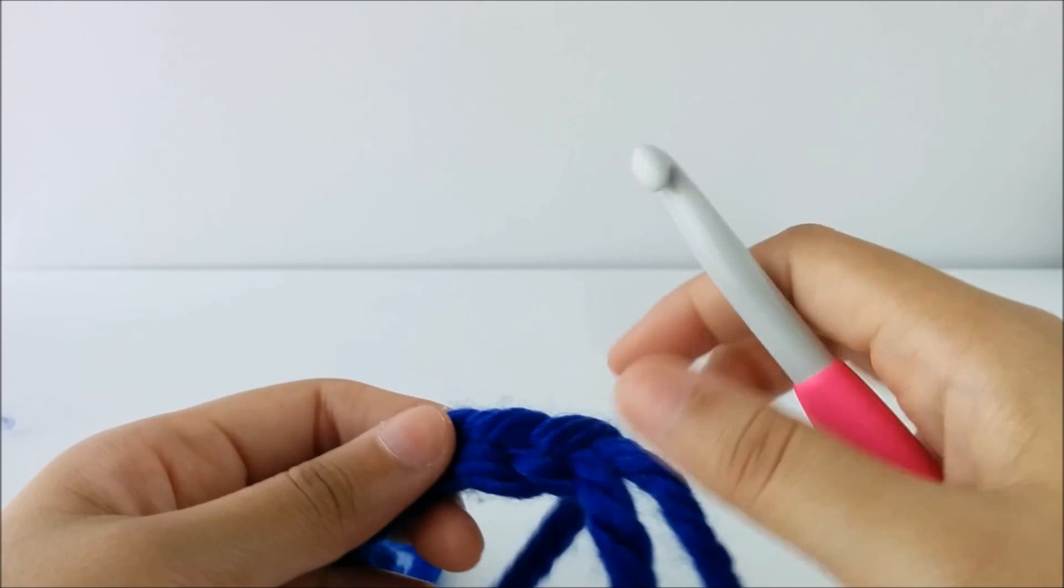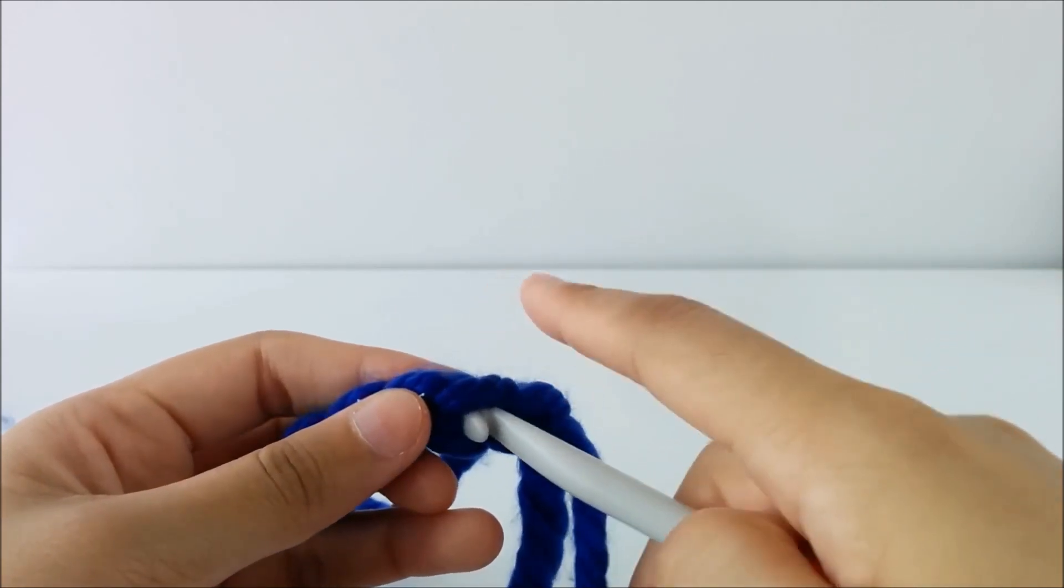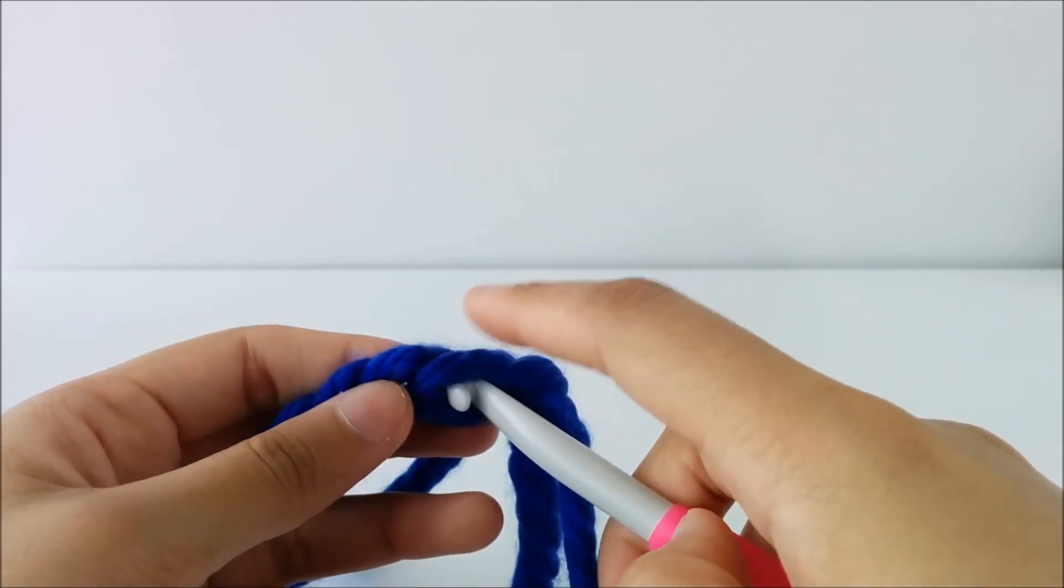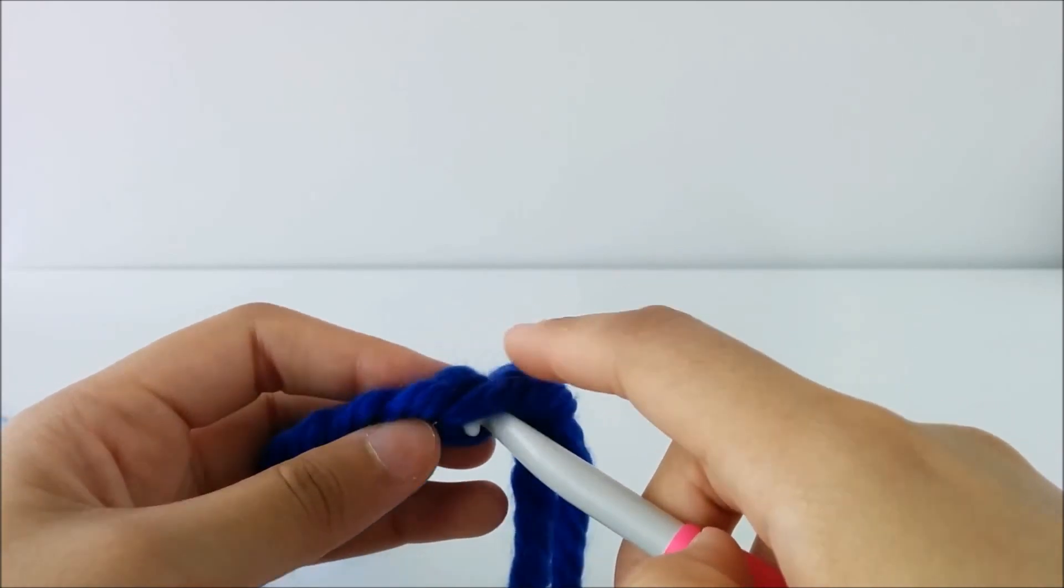But for the most part, especially in the beginning, you're just going to be working into the center of the chain stitch like this. Just going underneath this back loop and the bump.